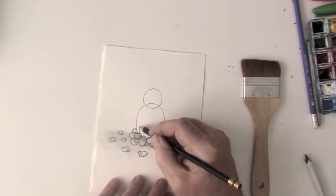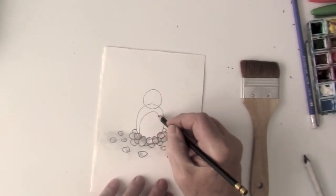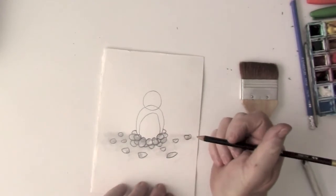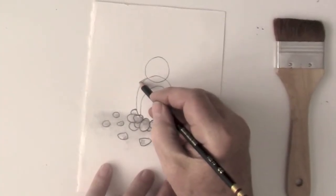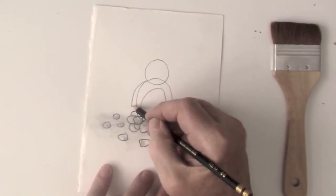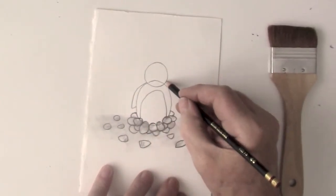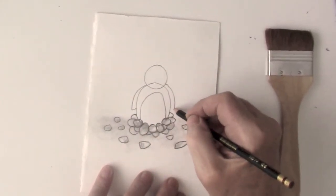Now, penguins usually have a little bit of a white stomach or white front. So I add that in. It doesn't have to be perfect. Next, we want to add a little wing coming out. They don't have big wings.